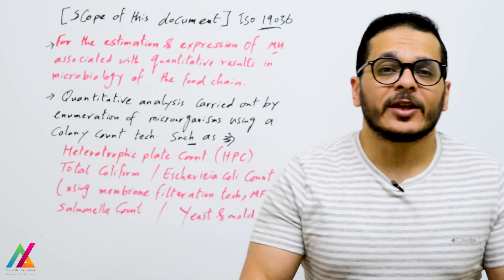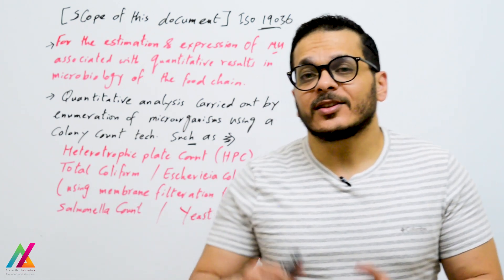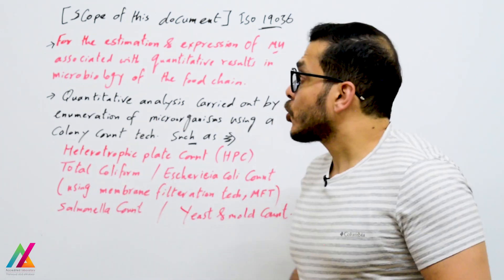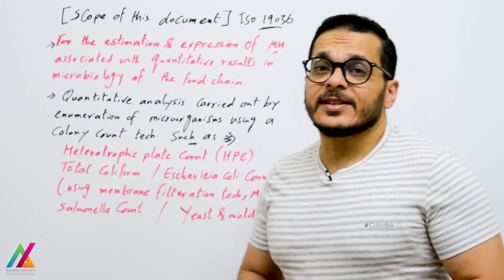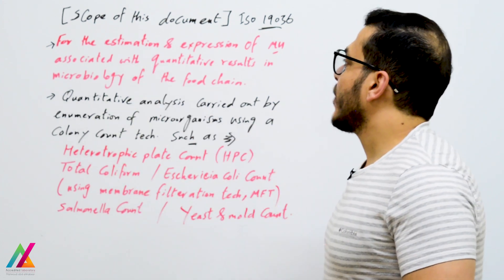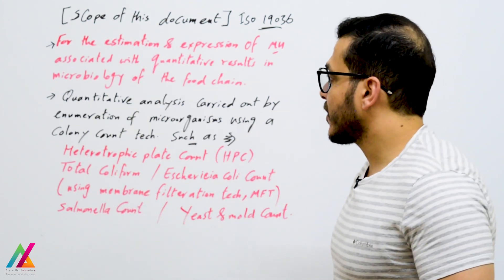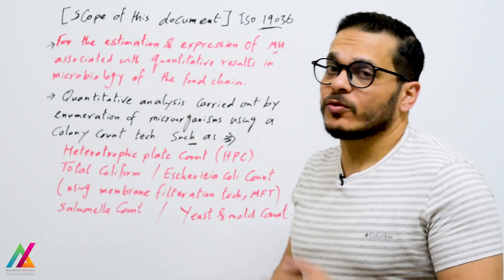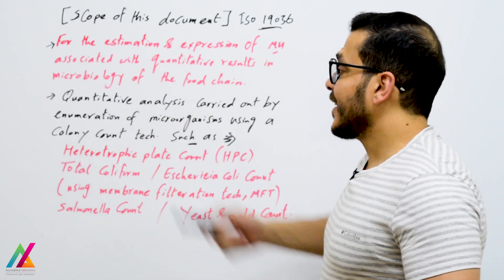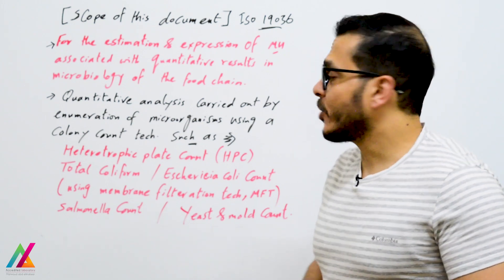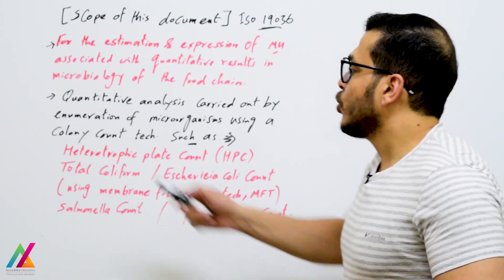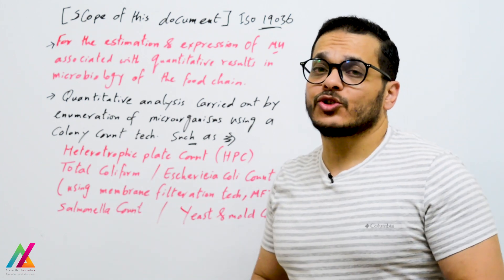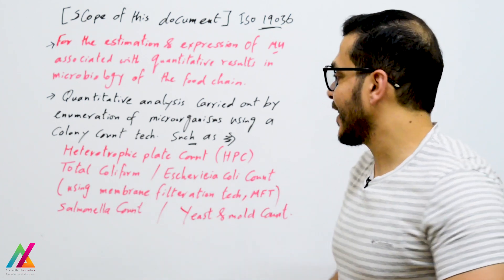All previous lectures are considered as introduction only. The scope of this document, ISO 19-036, covers the estimation and expression of measurement uncertainty associated with quantitative results in microbiology of the food chain — specifically quantitative analysis carried out by enumeration of microorganisms using a colony count technique.